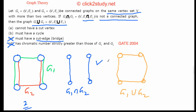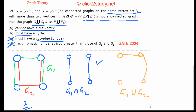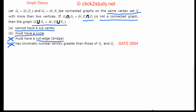We've eliminated options C and D. We have a cycle in this example for option B, but since this isn't a counter-example it doesn't eliminate it — we need to investigate further. For option A, 'cannot have a cut vertex,' we're not seeing a cut vertex here either, so we need to investigate both remaining options further.